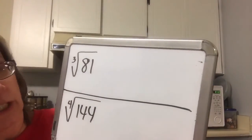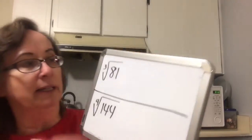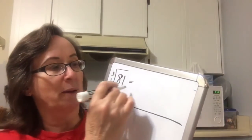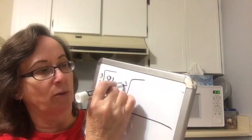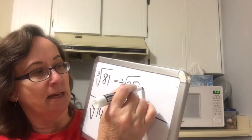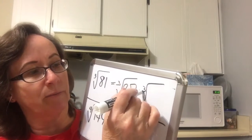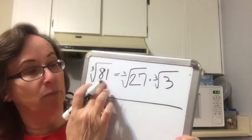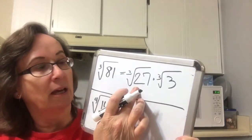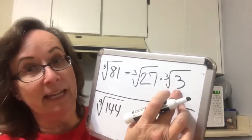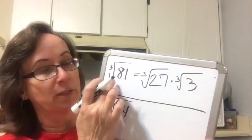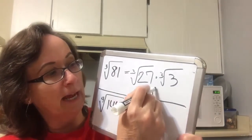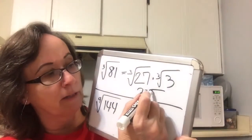On the next board, we have a cubic root of 81. I'm going to split this one into cubic root of 27 times the cubic root of 3, putting the perfect cube that is a factor of 81 into the first radical and the leftover so that these two still multiply together to give me 81. The cubic root of 27 is 3, and then I write on the cubic root of 3.